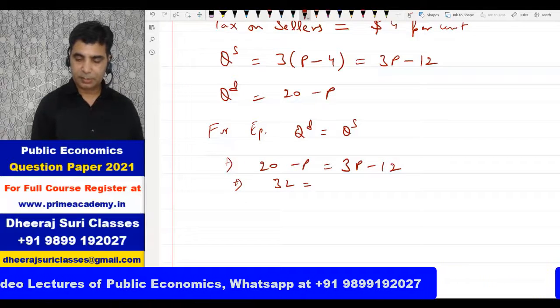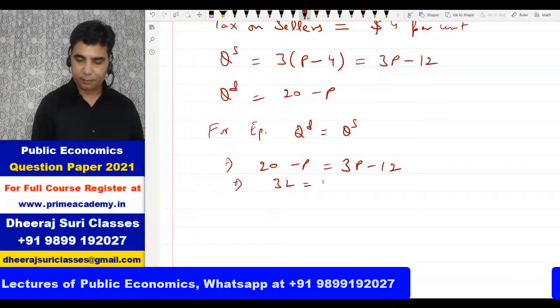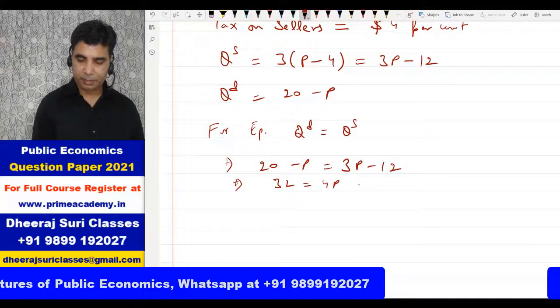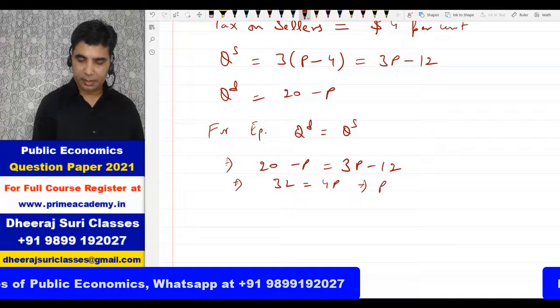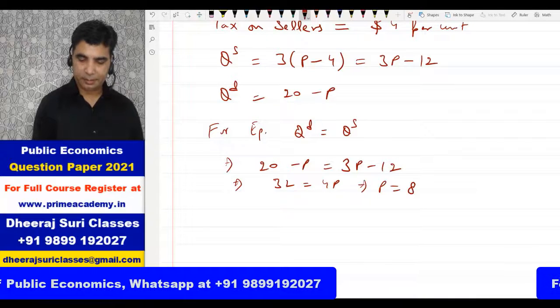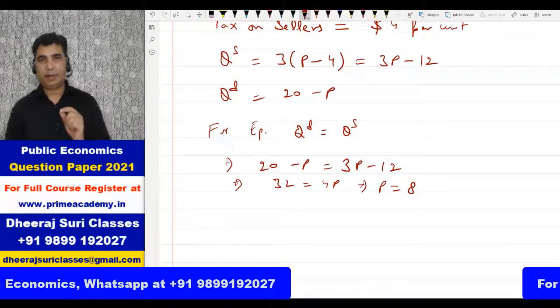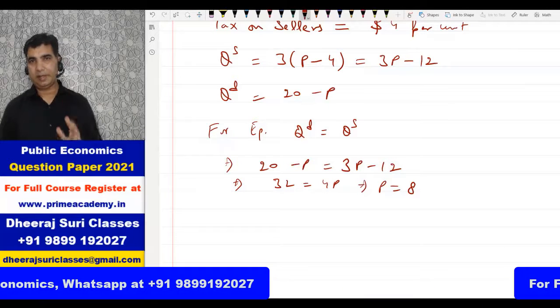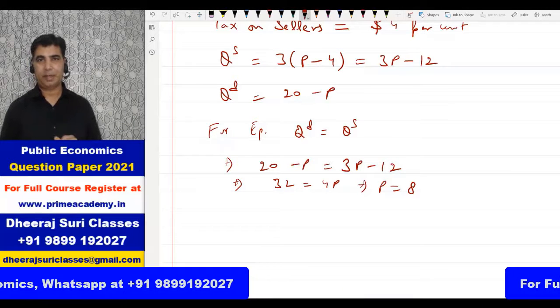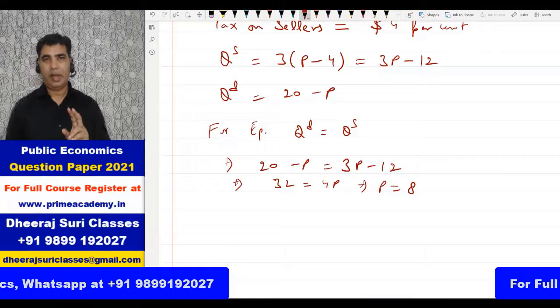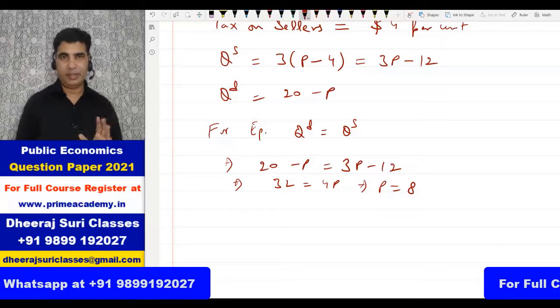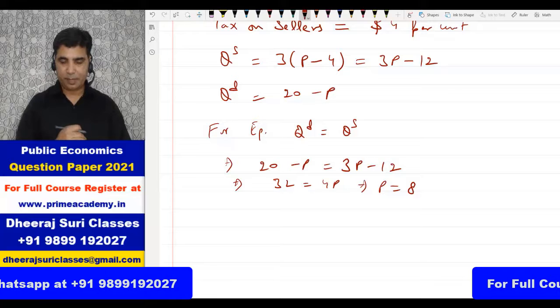Solving the equation: 20 minus P = 3P minus 12 gives us 32 = 4P, so the new equilibrium price P = 8. The market price after tax is $8.